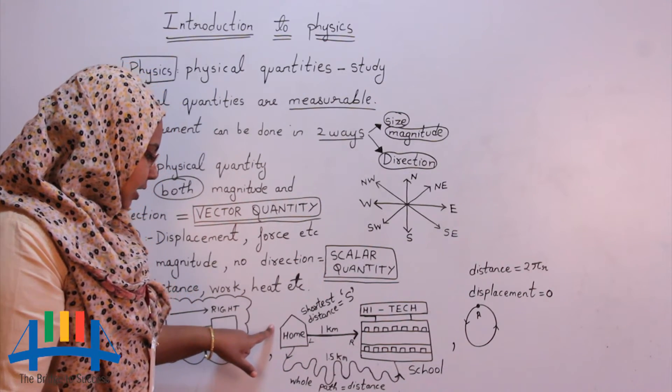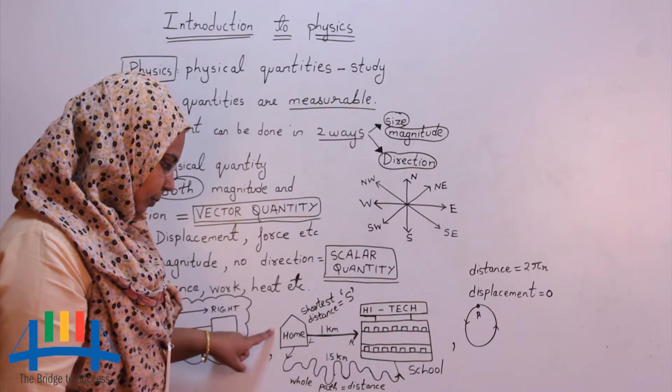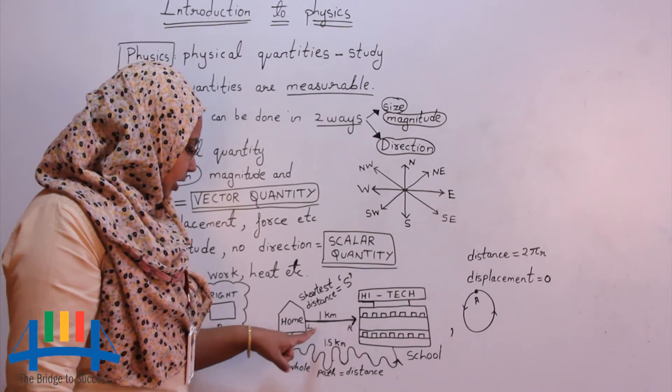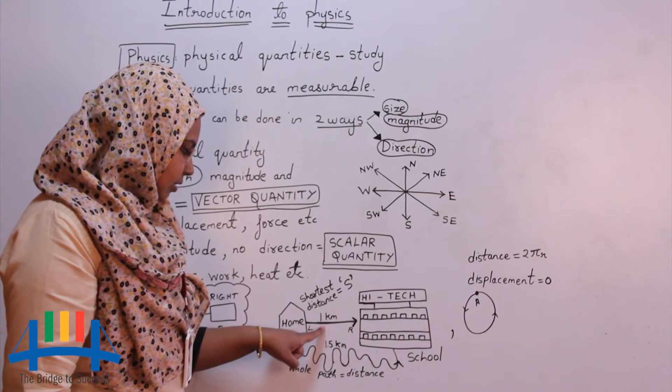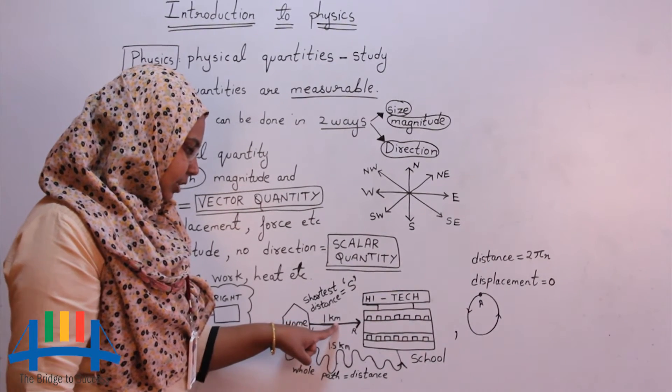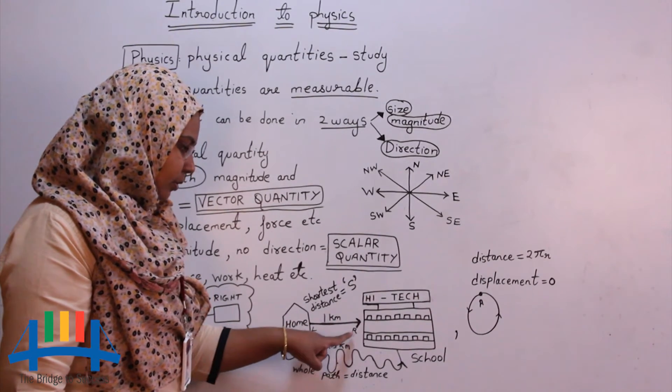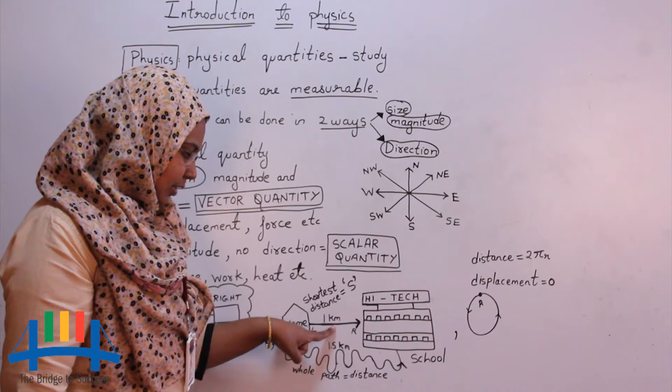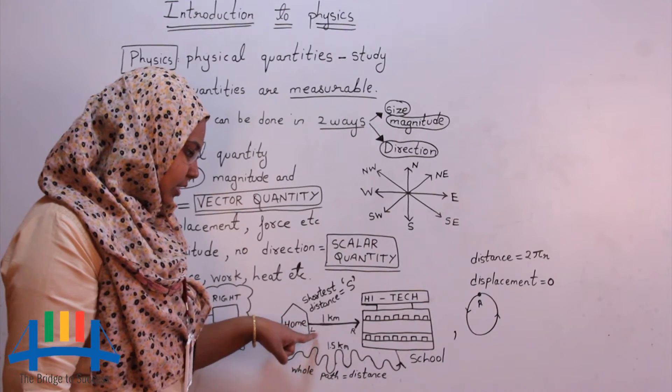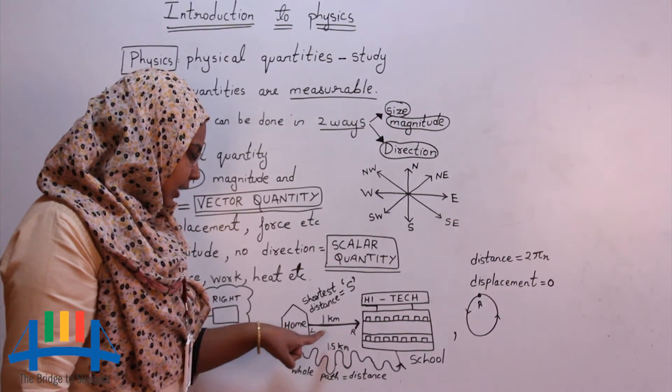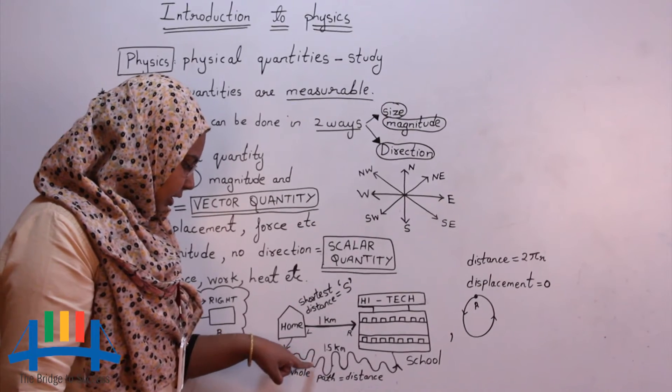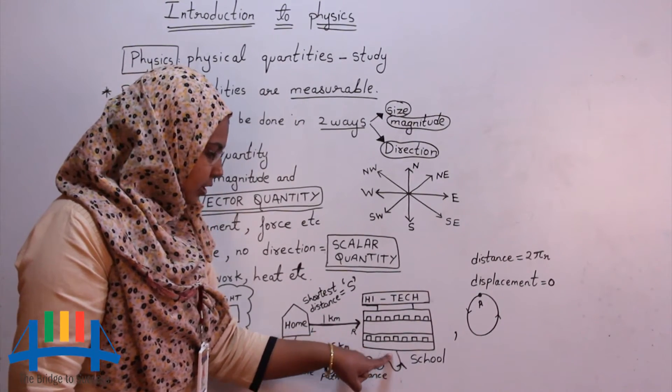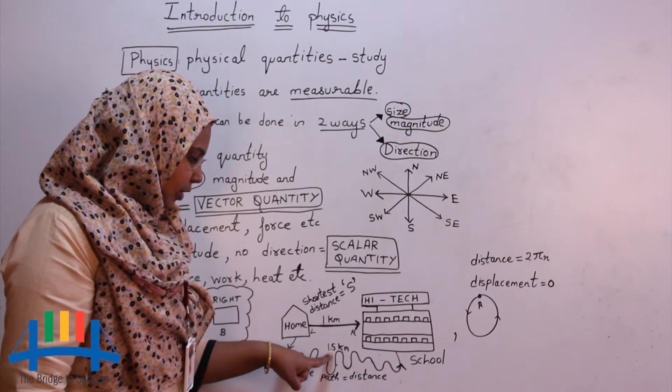Let us take one more example. I have started from my home and went all the way to the high tech school. So here the distance, the magnitude is 1 km and the direction is from left to right. There are two ways to reach the school. One is this which I just travelled that is 1 km magnitude and the direction is left to right. And the other way is, all the way like this, you can see it's all confusion, left, right, left, right and I have reached the school.